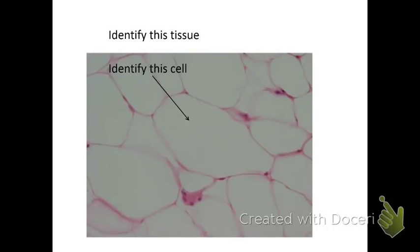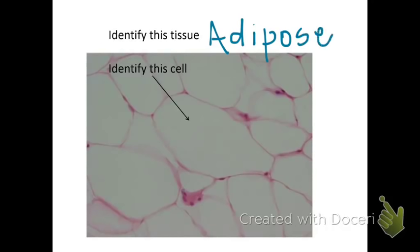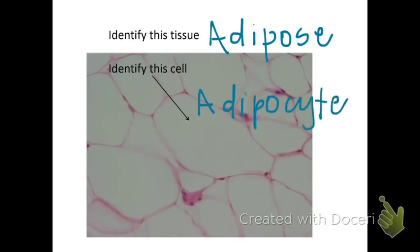This first one says identify the tissue and identify the cell. The tissue is adipose tissue — make sure you can spell it right, practice writing it five times. The cell type: anytime something ends with C-Y-T-E, it's a cell. So an adipocyte is an adipose cell, or a fat cell. This is going to be your insulator.